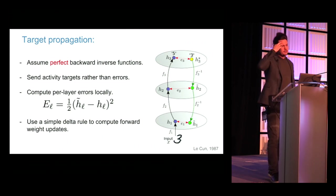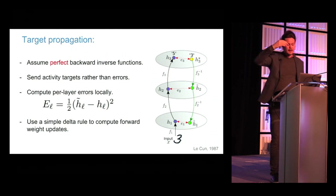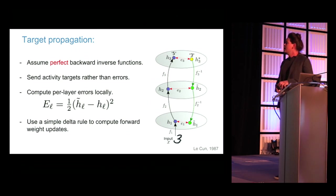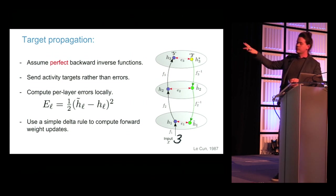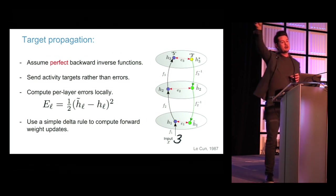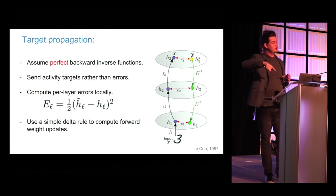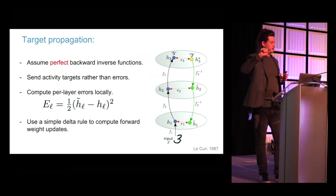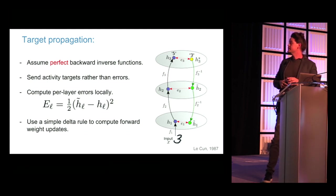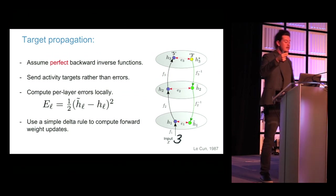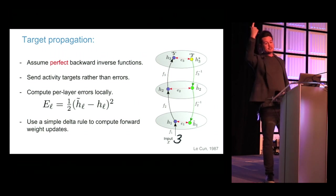We started with the algorithm called Difference Target Propagation from Yoshua's lab. The idea — which I think originally came from Yann LeCun — is very simple. You do a forward pass through your network, and with perfect inverse functions you take the target you actually wanted, propagate it back down through your network, and then take local per-layer errors to drive learning locally at each layer using just a delta rule. The target at each layer is one where, if you had produced that activity and passed it forward, you would have gotten the right output.